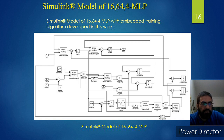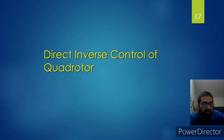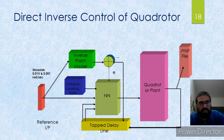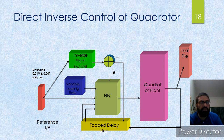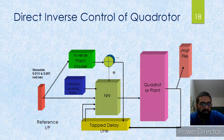I tested this for the control of the quadrotor plant model — the direct inverse control of the quadrotor. Here is a block diagram where you can see the quadrotor plant. The neural network is connected to the tap delay line, the reference is going into the inverse plant model and then into the neural network. We are also giving it a certain learning rate, and the output of the quadrotor plant is saved to a .mat file. The neural network is the heart of this system — it is the controller that controls the quadrotor plant.